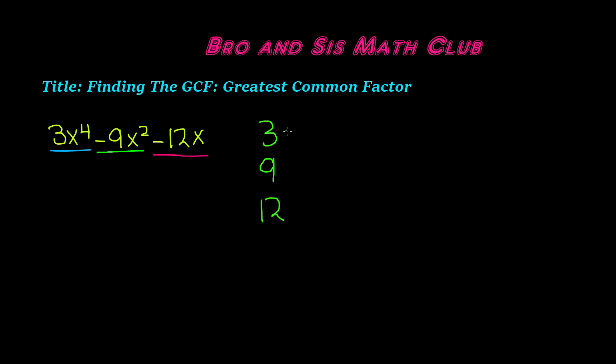So we need to find the factors of 3, 9, and 12. The factors of 3 are 1 and 3, the factors of 9 are 1, 3, and 9, and the factors of 12 are 1, 2, 3, 4, 6, and 12.